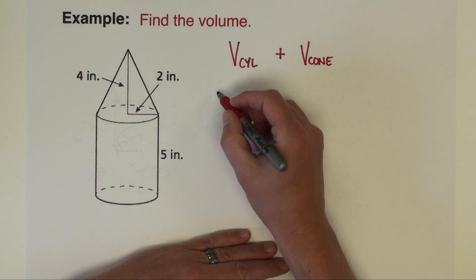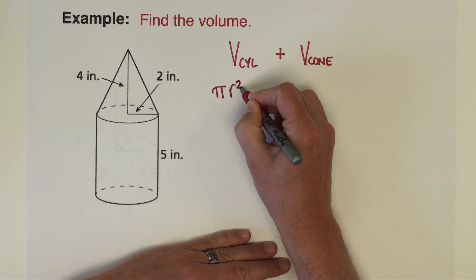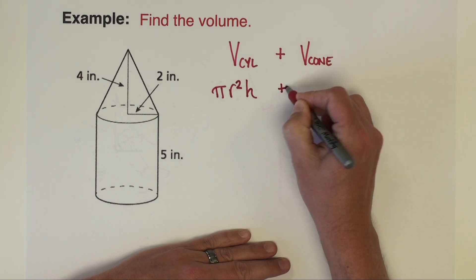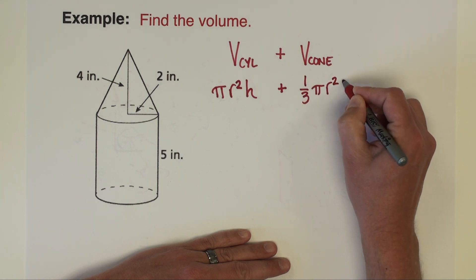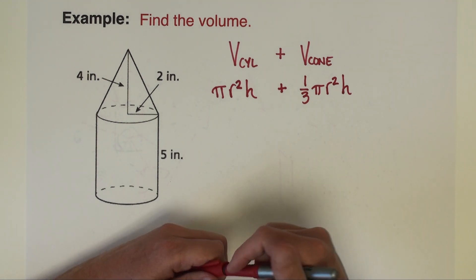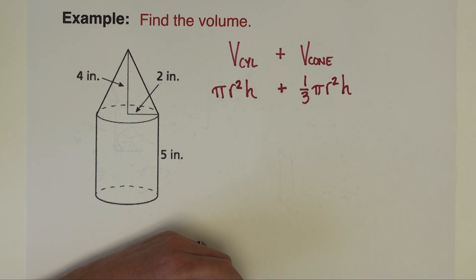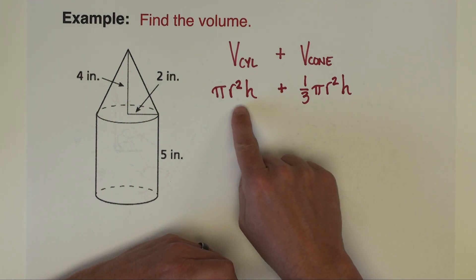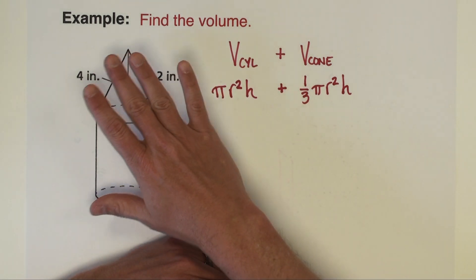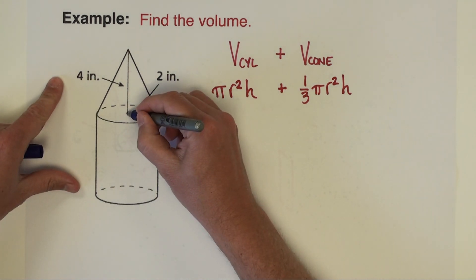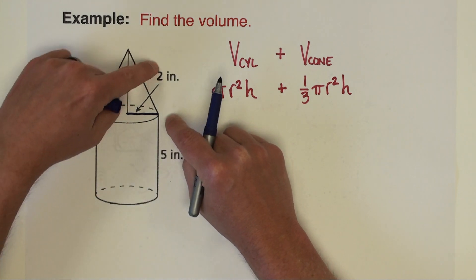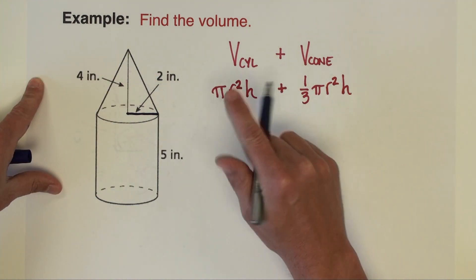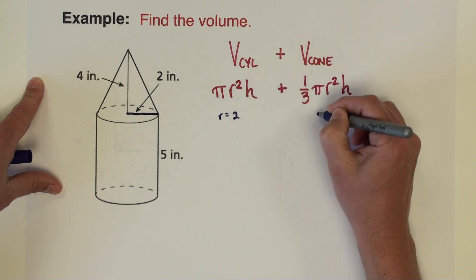Our volume formulas: for a cylinder we want pi radius squared times height, and for the cone we want one-third pi radius squared times the height. Now it's important not to get confused on these radius and heights because they could be different for the different shapes. It just so happens that the radius that we see right here is the same radius of the cylinder as it is for the cone. So for both of these the radius is going to be 2.